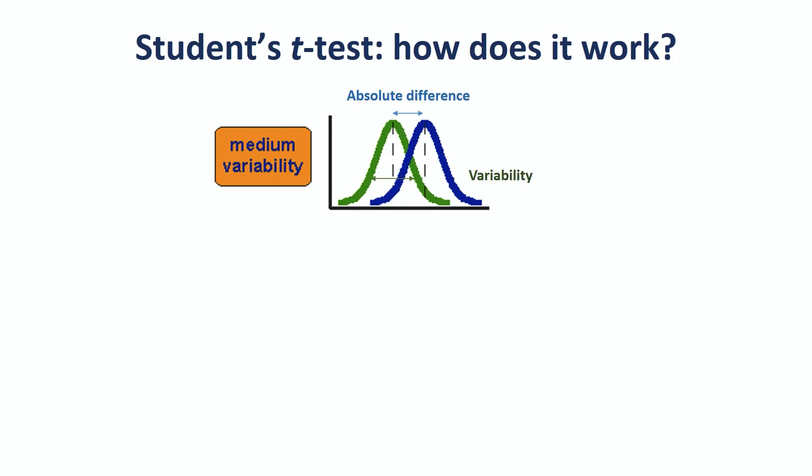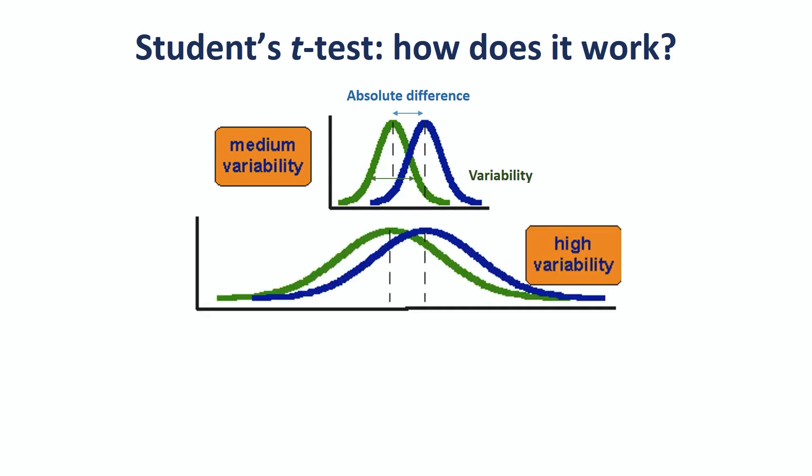Now, if we look at this graph, and we try to guess the likelihood of a significant difference between the two groups, we are probably going to be a bit unsure. There is something going on, right? But would it be significant? Not so sure. Now, if we look at this second graph, same absolute difference and same sample size, there is no way here that we reach significance, no way we could discriminate between the two groups. And if we look now at the third graph, again, same absolute difference and same sample size, here, yes, we will get a significant result. So, variability does matter.